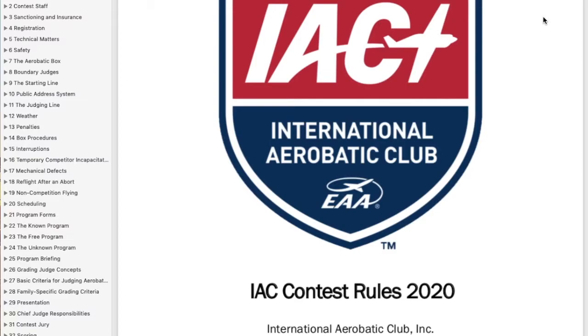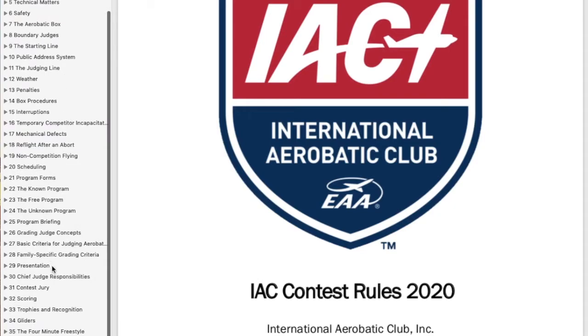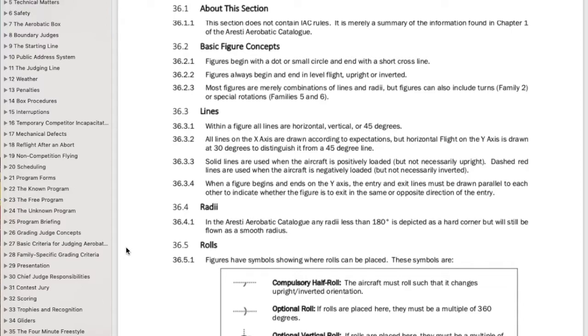So step one here with reading Aresti diagrams, we're going to talk about the overview which is in the contest rulebook for 2020 from the International Aerobatics Club. On the left I have the table of contents and I'm going to scroll down to chapter 36 which is understanding Aresti notation.